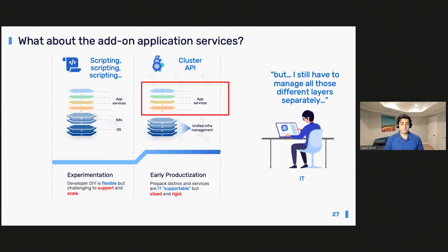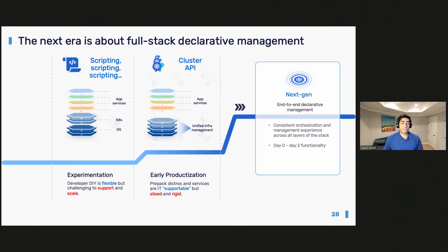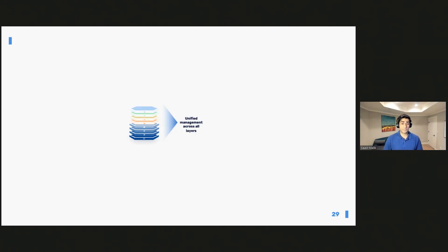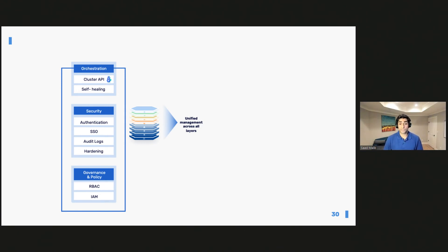Let's look at where we left off with the complexity. In the early productization phase, where Cluster API becomes more popular, the challenge for IT operations is that regardless of managing multiple locations or unique requirements for different teams, they still have to manage the complexity of the application services that sit on top. This is where there's a gap — where Kubernetes declarative management should cover not only the machines, operating system, and Kubernetes, but also all the application services, extending that unification of the core layers to include application services. This is what we focus on at Spectral Cloud.